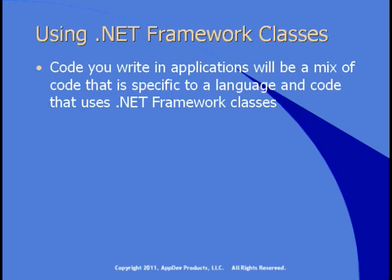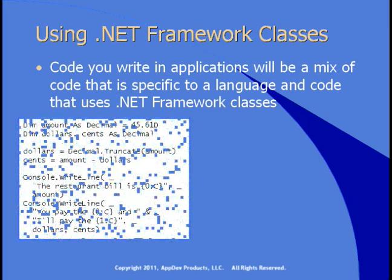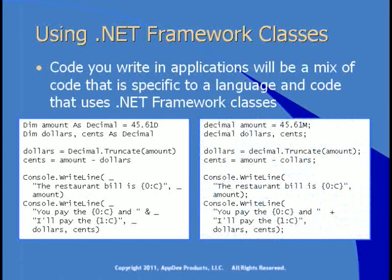You can use all of these classes in your code. Code that you write winds up being a mix of code that's specific to your language and also code that uses .NET Framework classes. For example, compare two examples here — on the left is Visual Basic, on the right is C#. This code is going to take a restaurant bill and figure out what part is the dollars and what part is the cents. The first line of code in both examples creates a variable called amount, declared as a decimal, and stores 45.61 to it.